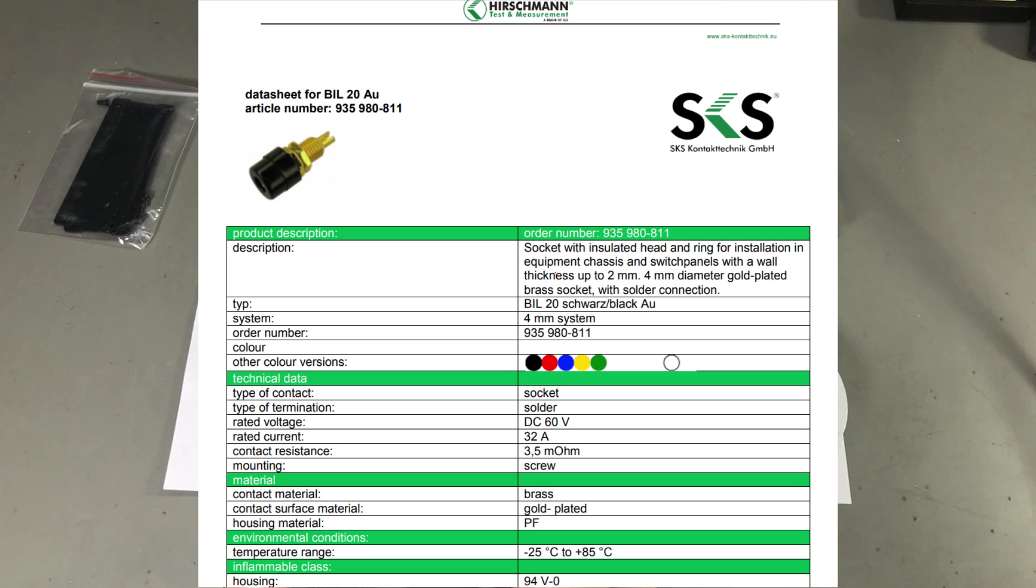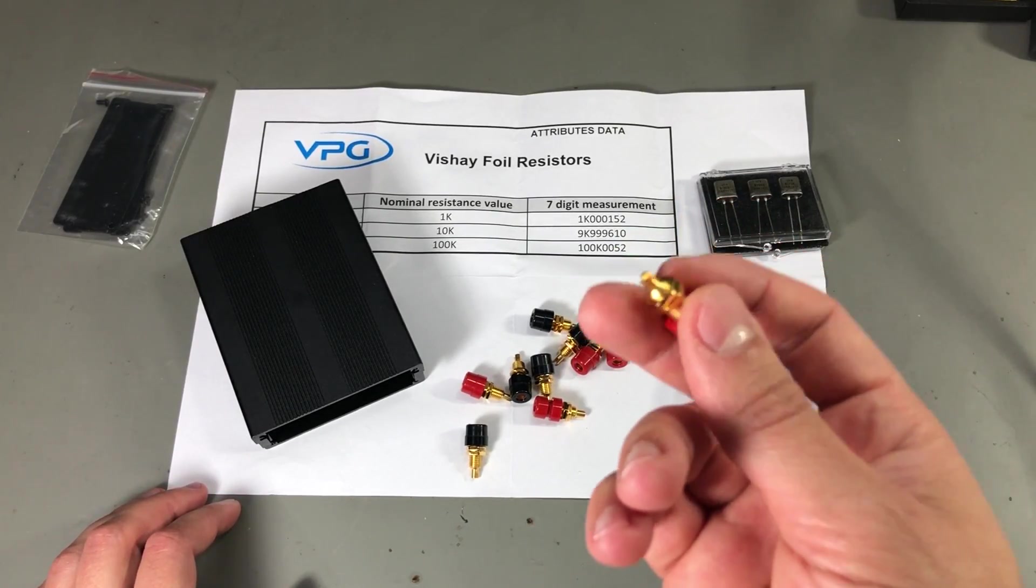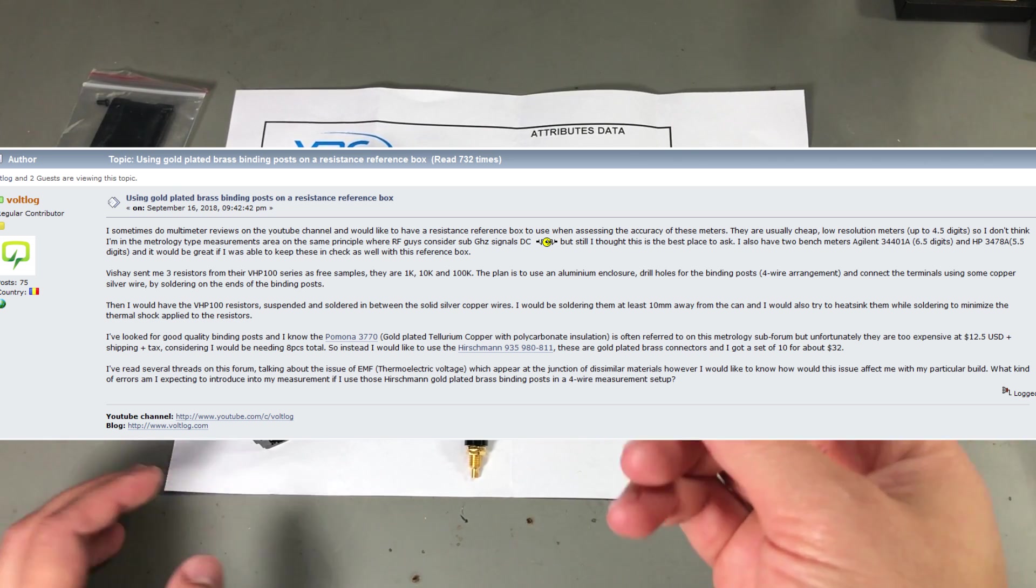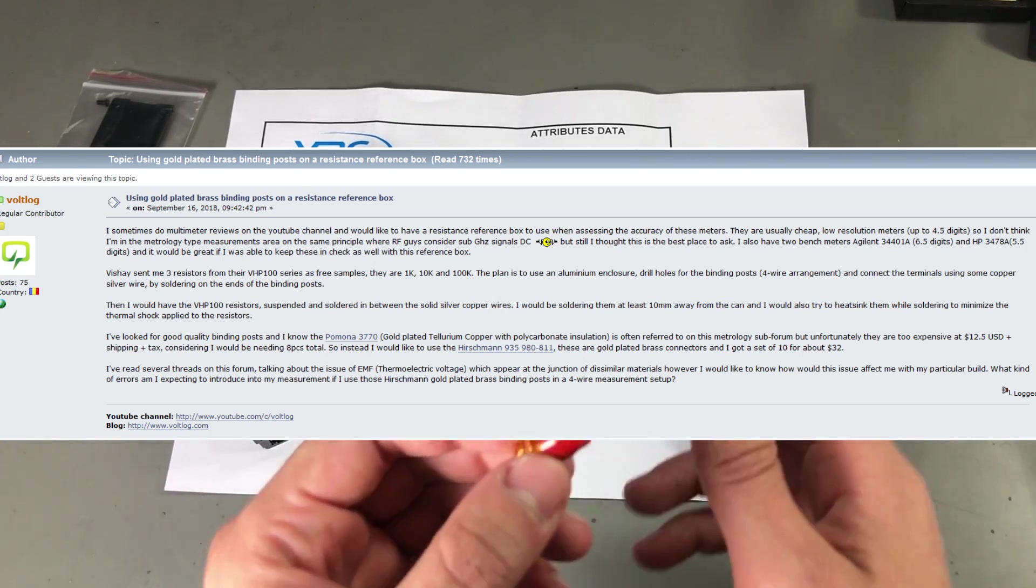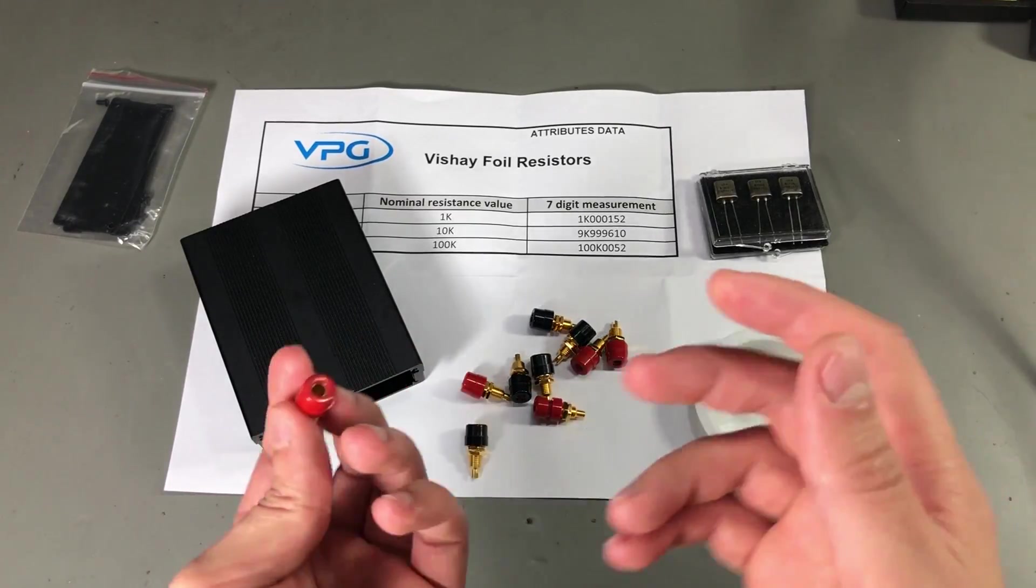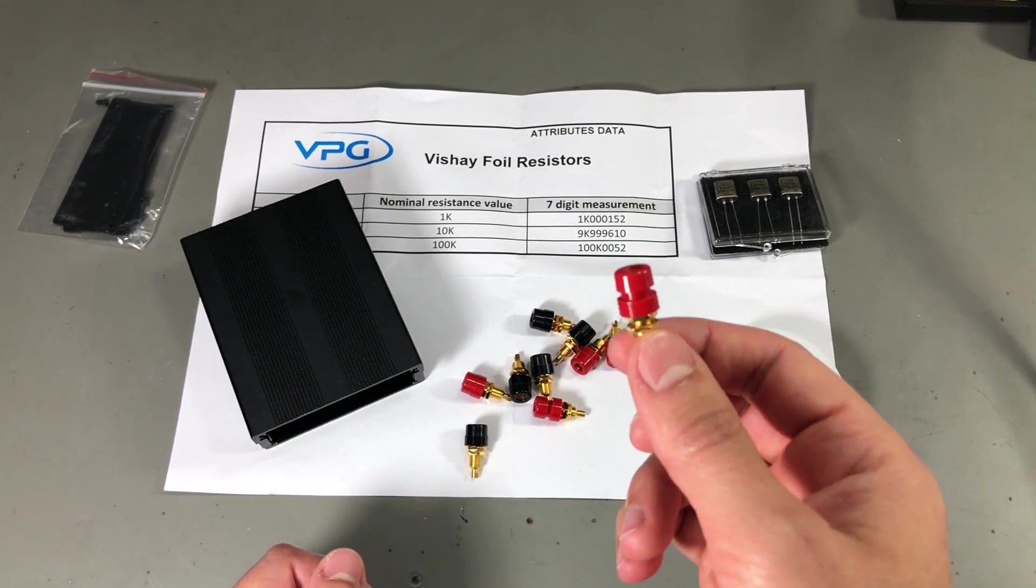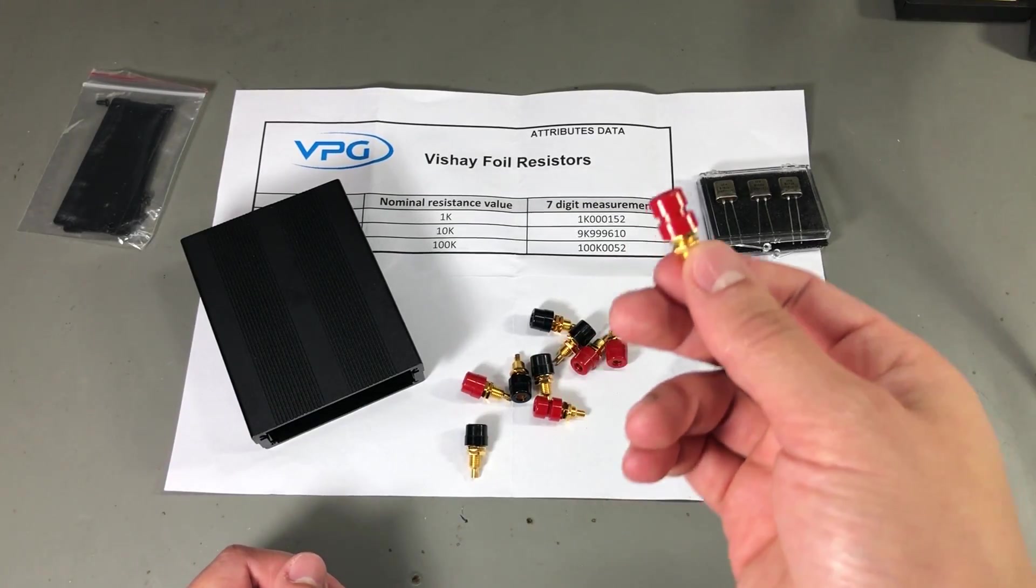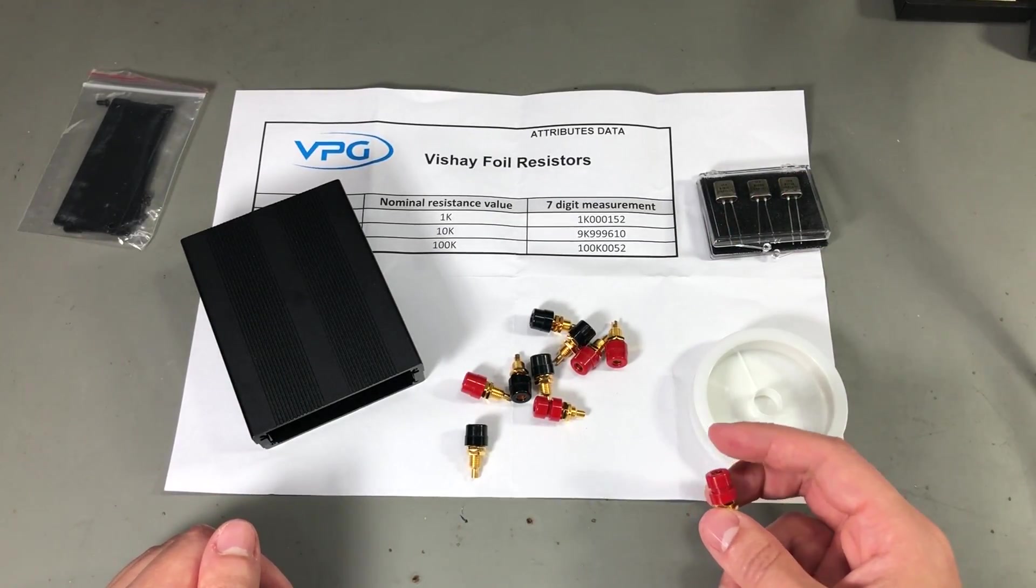The discussion whether to use more expensive tellurium copper binding posts over these gold plated brass ones is still open. I have started a thread on the EEV blog forum and people suggested that for the purpose that I'm going to use them, the thermoelectric voltage would be so small that it would not interfere with my measurements. But no one mentioned any clear numbers. One thing is for sure it was way over my budget to get binding posts that cost $25 or $30 a piece just to go all in and go with the tellurium copper binding posts.